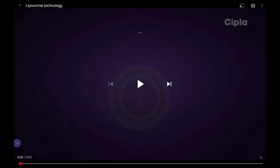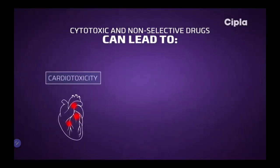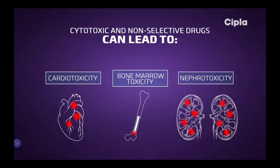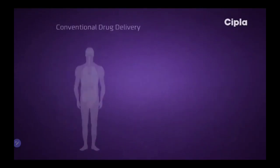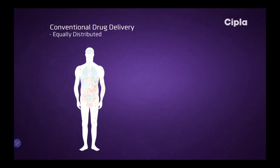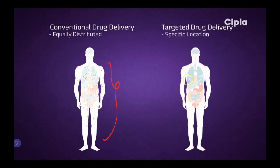This next video is courtesy of CIPLA. I will show you the working of liposomes developed by CIPLA. Because anti-cancer drugs are cytotoxic, if you give them without selectivity they will cause cardiotoxicity, bone marrow toxicity, and nephrotoxicity. If you give the normal drug, it will be distributed throughout the body. But if you target the drug, it is delivered only at the particular place.